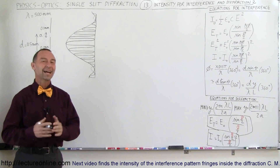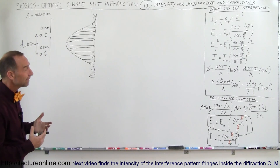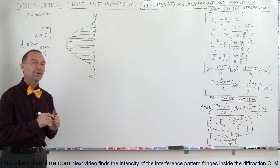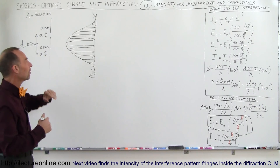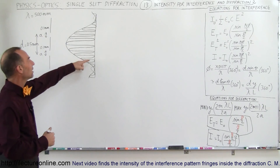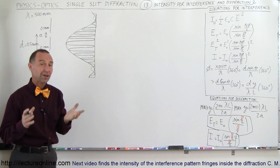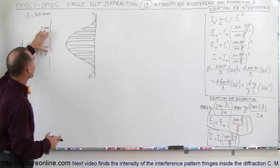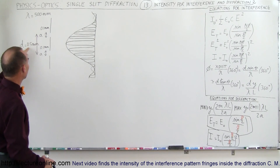Welcome to ElectronLine. Now to show you what these diffraction patterns look like, we're going to combine them with interference patterns. In the previous video we showed you the ratio of how many interference fringes you'll find inside the central maximum of the diffraction pattern. Here's a double slit pattern — let's say the distance between the slits is 0.5 millimeters and the width of each slit is 0.1 millimeter.